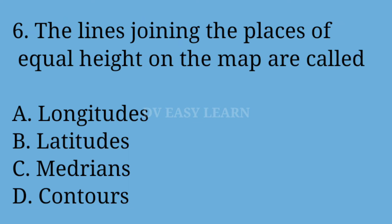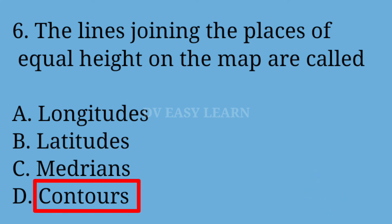Sixth Question: The lines joining the places of equal height on the map are called — correct answer: Contours.